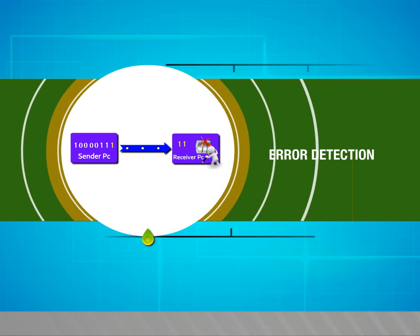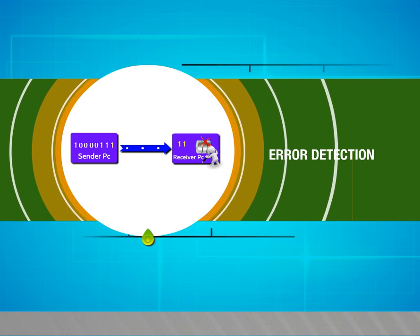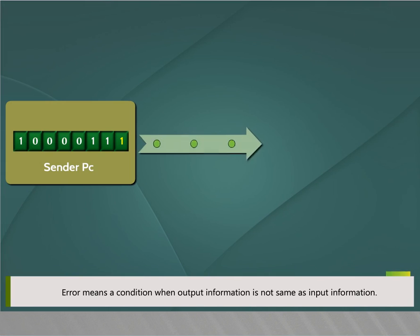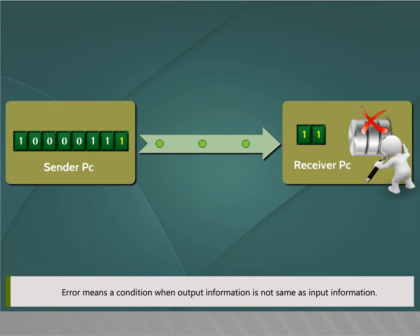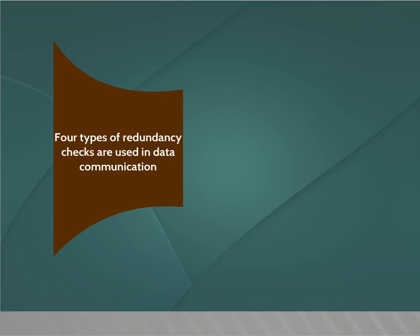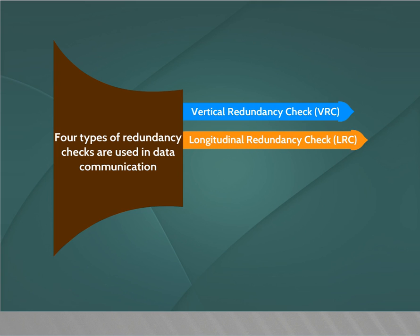Error detection. In this video, we are going to see about error detection. Error means a condition when output information is not the same as input information. Four types of redundancy checks are used in data communication: vertical redundancy check (VRC), longitudinal redundancy check (LRC), cyclic redundancy check (CRC), and checksum.